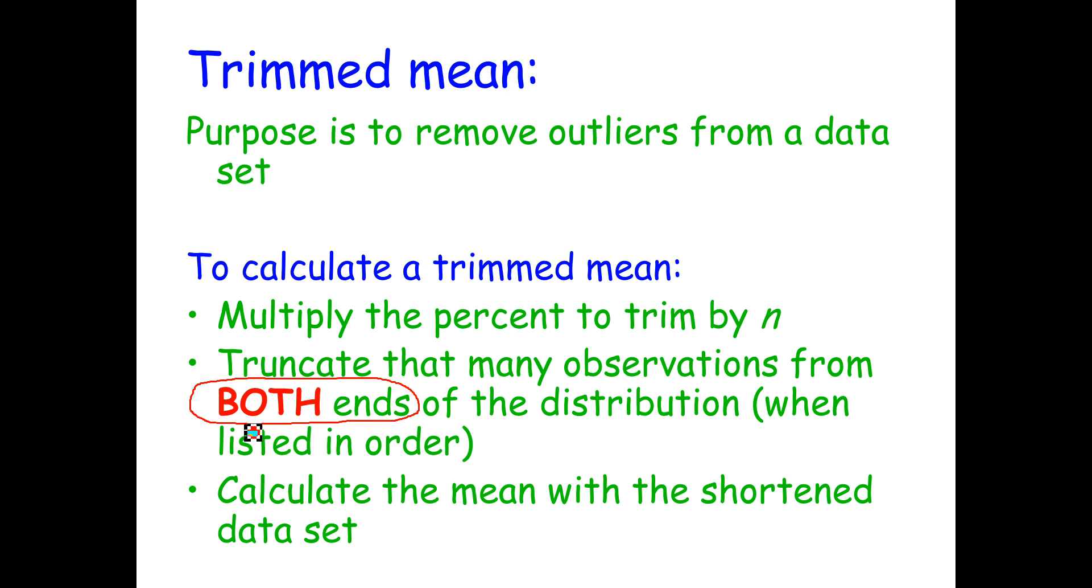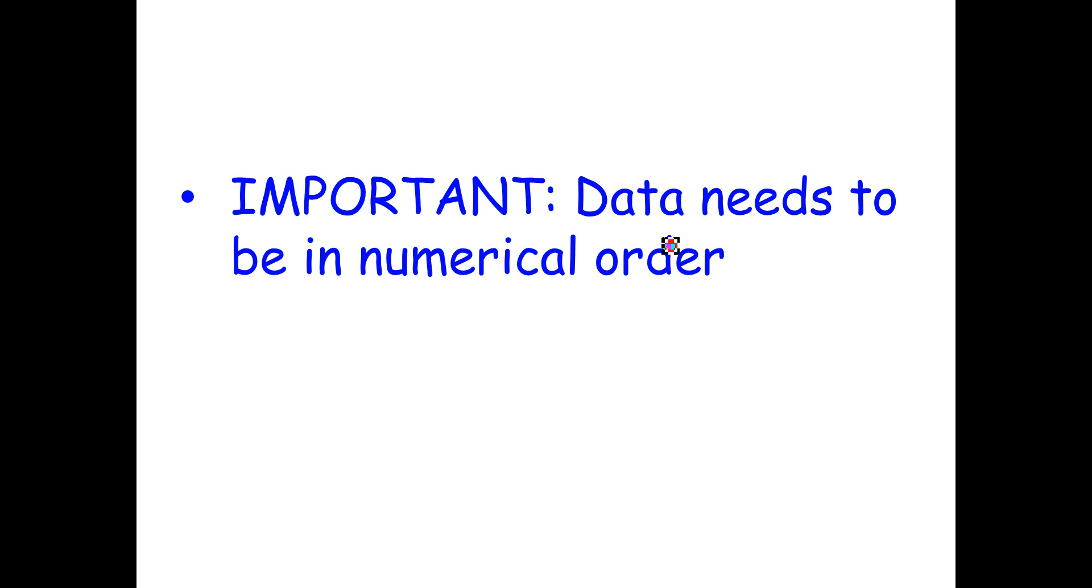So let's review. When you trim the mean or trim the data set in order to take the trimmed mean, you're going to be removing data points from both ends and your data itself must be in numerical order. So let's try an example so you can make sense of everything I just said.